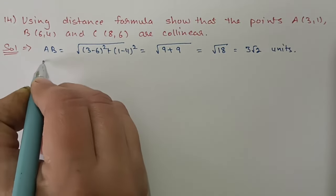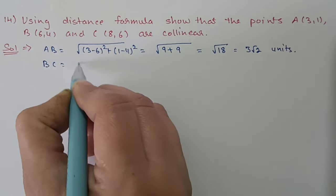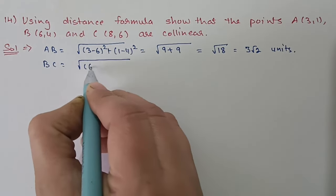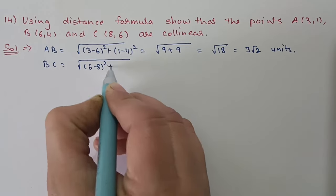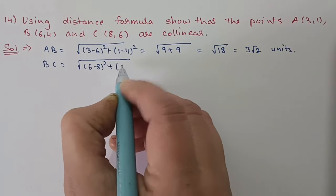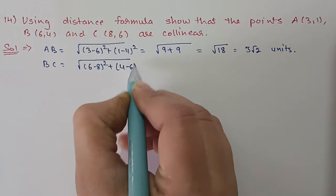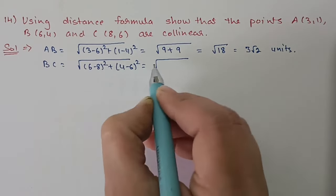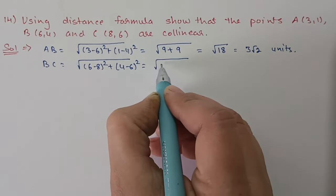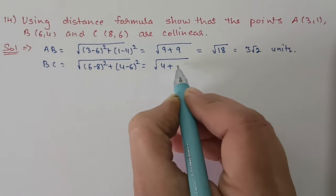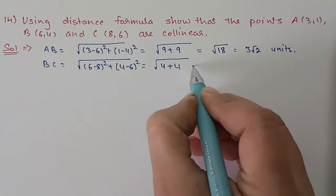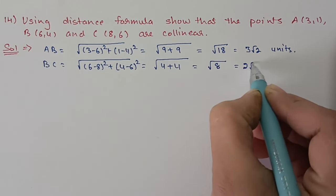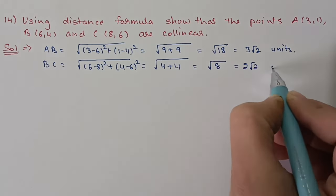Now we find BC = √((6−8)² + (4−6)²) = √(4+4) = √8 = 2√2 units.